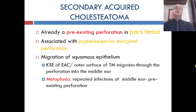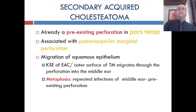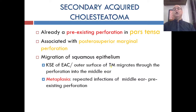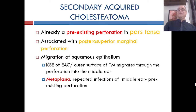In secondary acquired cholesteatoma, there is already a pre-existing perforation in the pars tensa, usually associated with a posterosuperior marginal perforation. Keratinizing squamous epithelium of the external auditory canal and outer surface of the tympanic membrane migrates through the perforation into the middle ear. Alternatively, metaplasia can occur due to repeated infection of the middle ear through the pre-existing perforation.